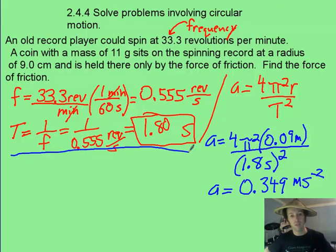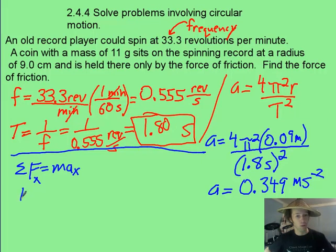Now, just as you've done before, you use Newton's second law. The only horizontal force on this coin is the frictional force, which keeps it in circular motion. We put in the mass converted to kilograms times its acceleration,